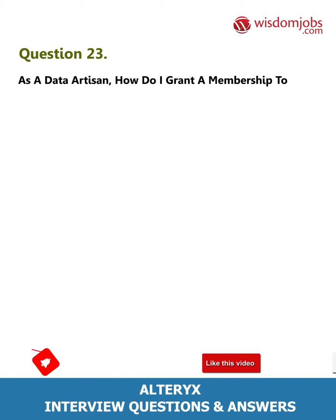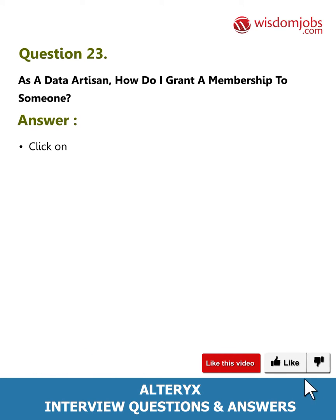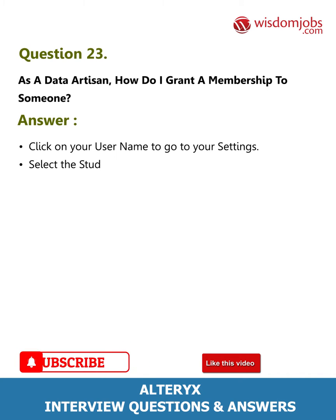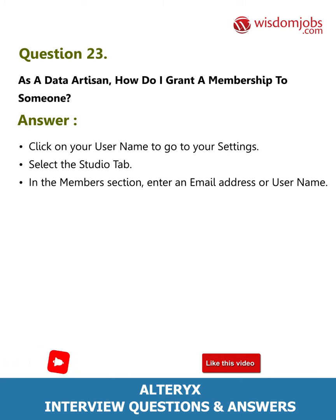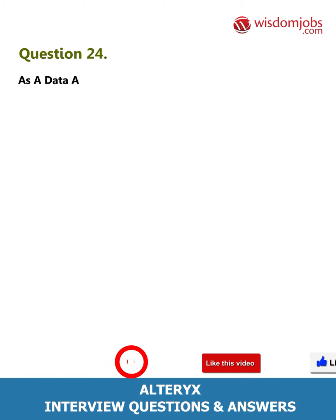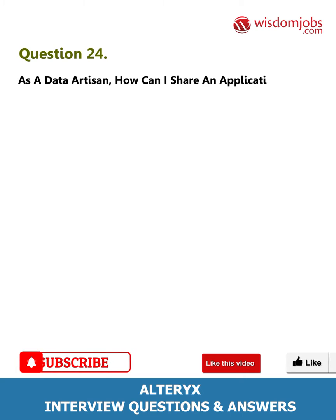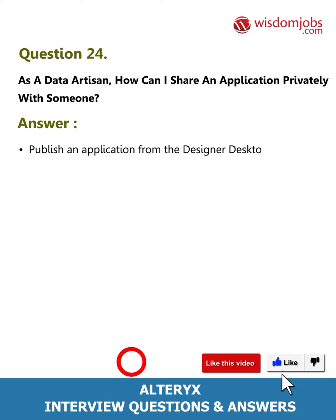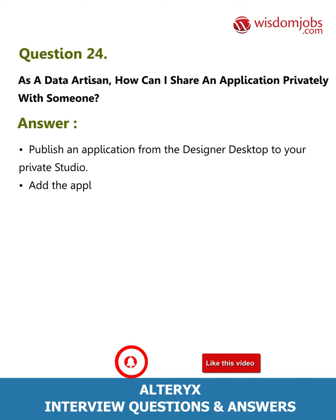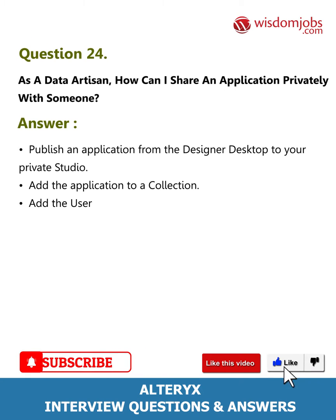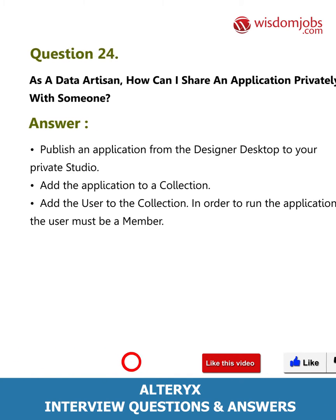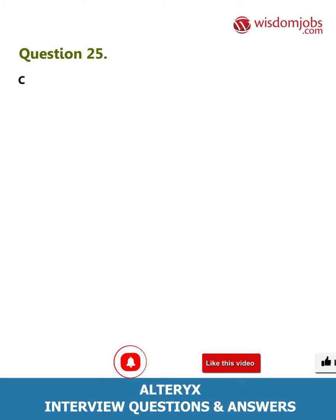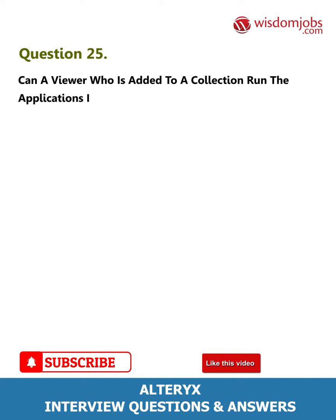Question 23: As a data artisan, how do I grant a membership to someone? Answer: Click on your username to go to your settings, select the studio tab, and in the members section enter an email address or username. Question 24: As a data artisan, how can I share an application privately with someone? Answer: Publish an application from the Designer Desktop to your private studio, add the application to a collection, and add the user to the collection. In order to run the application, the user must be a member.